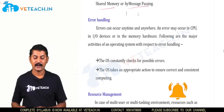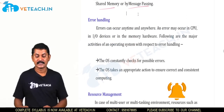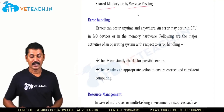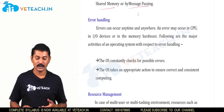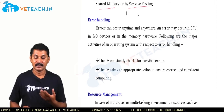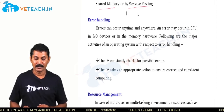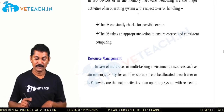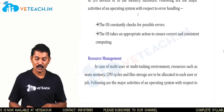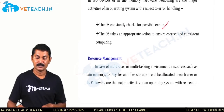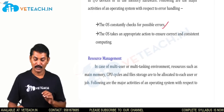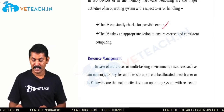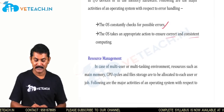For error handling, errors can occur anytime and anywhere. An error may occur in the CPU, in I/O devices, or in main memory hardware. There are two major activities: the OS constantly checks for possible errors, and the OS takes appropriate action to ensure correct and consistent computing.